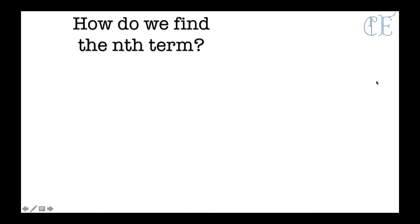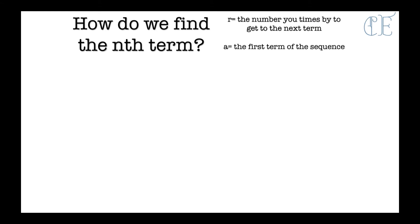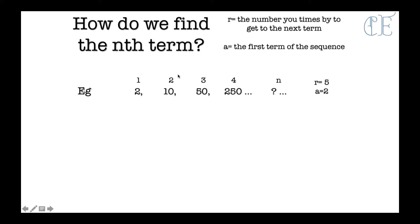So how do we find the nth term? Remember that r is the number you times by to get to the next term, and a is the first term of the sequence. Here we have the first term which is 2, the second term is 10, and the third term is 50.